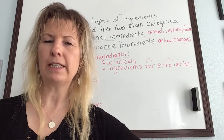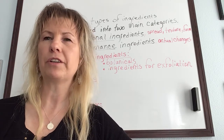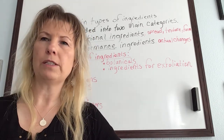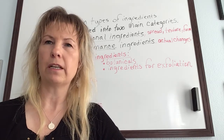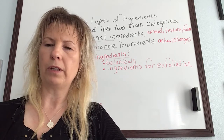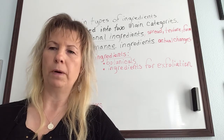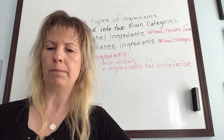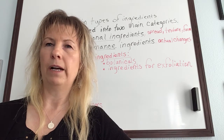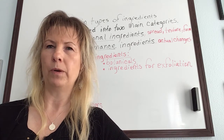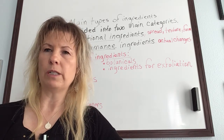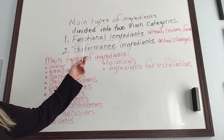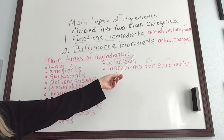We're back in Chapter 6, Skin Care Products, Chemistry, Ingredients, and Selection. In section 6-4, we're going to describe the main types of ingredients in cosmetic chemistry. This is a really long section, so I've divided it into two parts. Part 1 will end at exfoliation, and Part 2 picks up on lighteners and brighteners. Every ingredient used in our cosmetic chemistry has a purpose in the finished product, and they've divided them into two main parts: functional ingredients and performance ingredients.